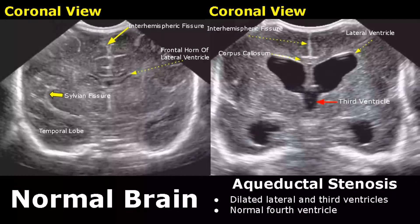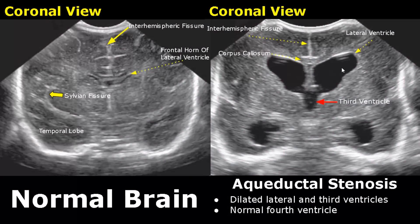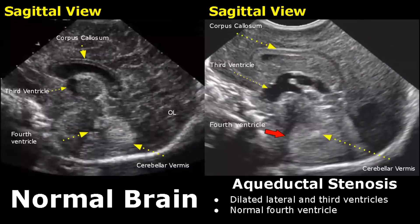In aqueductal stenosis, the lateral and third ventricles are dilated but the fourth ventricle is normal. This sagittal view shows a dilated third ventricle and the fourth ventricle is normal.